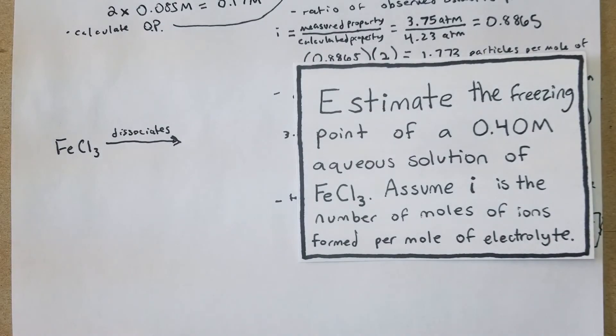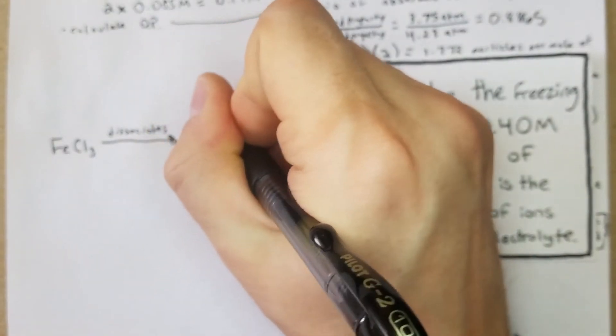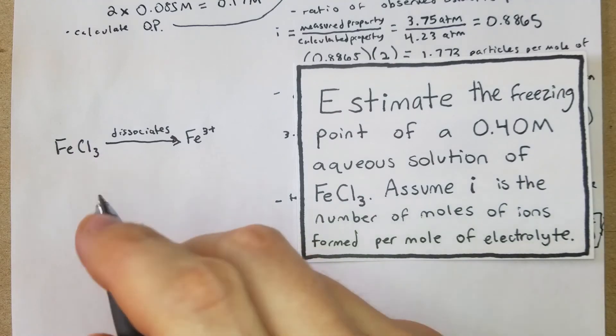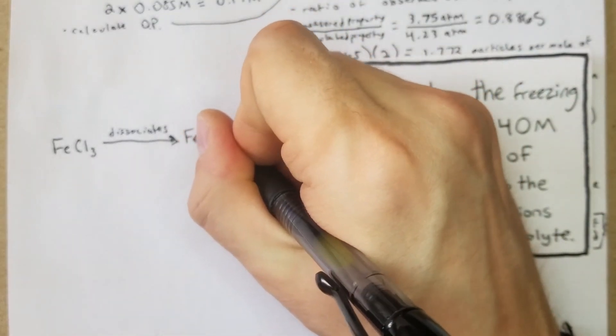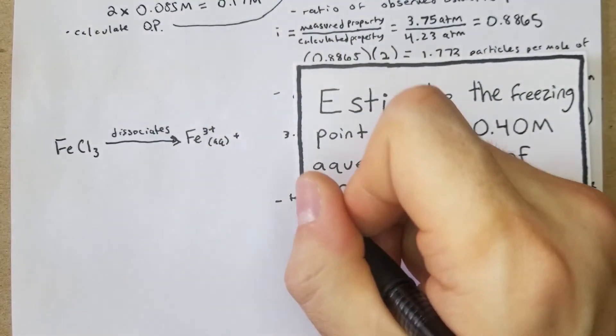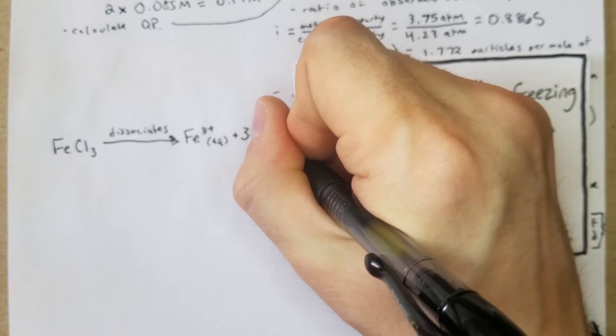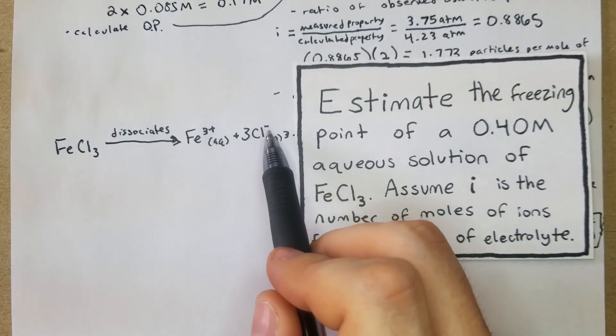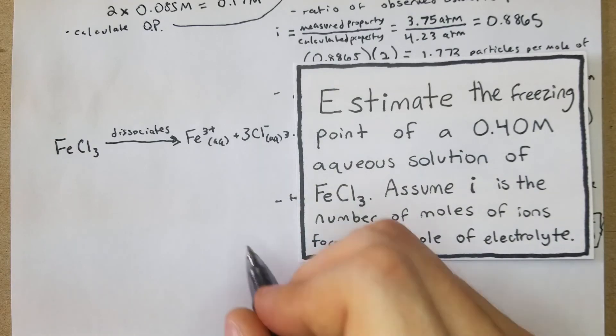What we're going to do is we're going to take the FeCl3 and look at what it dissociates into. That is going to dissociate into Fe3+ aqueous plus three Cl- aqueous. Make sure our balance is charged: we have three plus and then three times one minus is perfect.